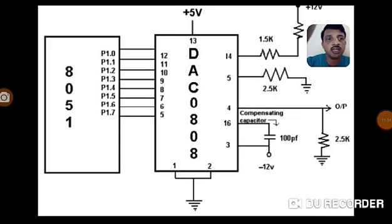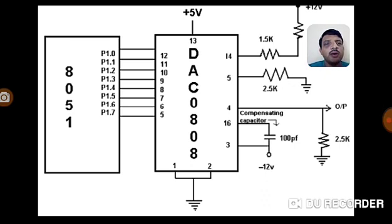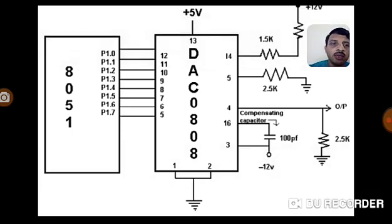Whenever we use this DAC with the 8051, here is the typical circuit to construct. All digital inputs of the DAC are connected to Port 0 of the 8051, and you get a current output which is connected to a simple resistor R to get the output voltage. For a proper application, you can add an inverting amplifier at the output. This is the typical connection for interfacing a DAC with the 8051.